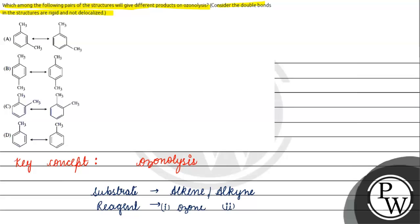If we use oxidative ozonolysis, we use H2O2. So we consider reductive ozonolysis using zinc and acid. In oxidative ozonolysis, the products differ — if we have a terminal carbon, oxidative ozonolysis can give carboxylic acid products.